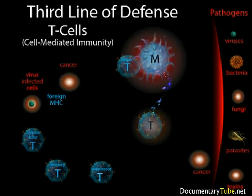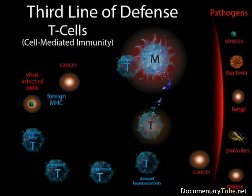Another type of effector T cell is the delayed hypersensitivity T cell, which responds to antigens by releasing chemicals that promote inflammation and promote phagocytosis by attracting macrophages through chemotaxis. These cells are particularly active in allergic reactions—for example, the itching and burning caused by poison ivy is a delayed hypersensitivity T cell response to antigens produced by skin cells that interact with poison ivy.